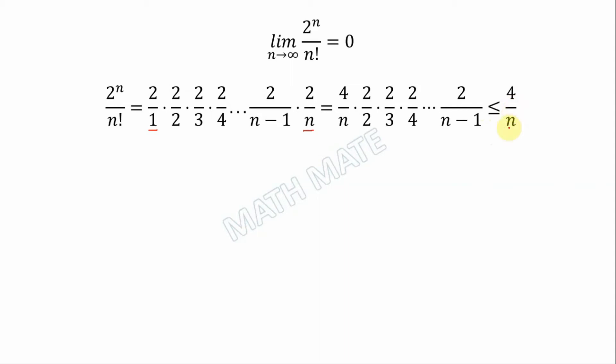From the left-hand side, our expression is more than zero, and from the right-hand side it's less than 4 divided by n. This limit goes to zero, and this limit also goes to zero when n goes to infinity.